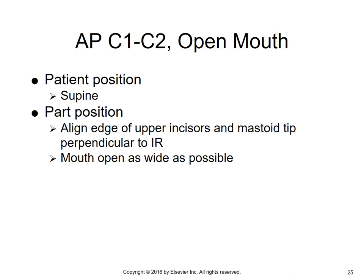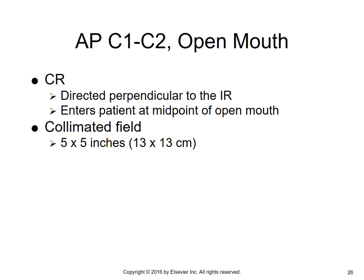For the AP open mouth view, you align the edge of the upper incisors and the mastoid tip perpendicular to the IR. Have the patient open their mouth, look to the bottom of the upper teeth, and imagine a line from the bottom of the upper teeth through the mastoid tip — that triangular structure right behind your ear. Adjust the head so that line is perpendicular to the IR, then open the mouth as wide as possible. The central ray is directed perpendicular to the IR, entering at the midpoint of the open mouth.